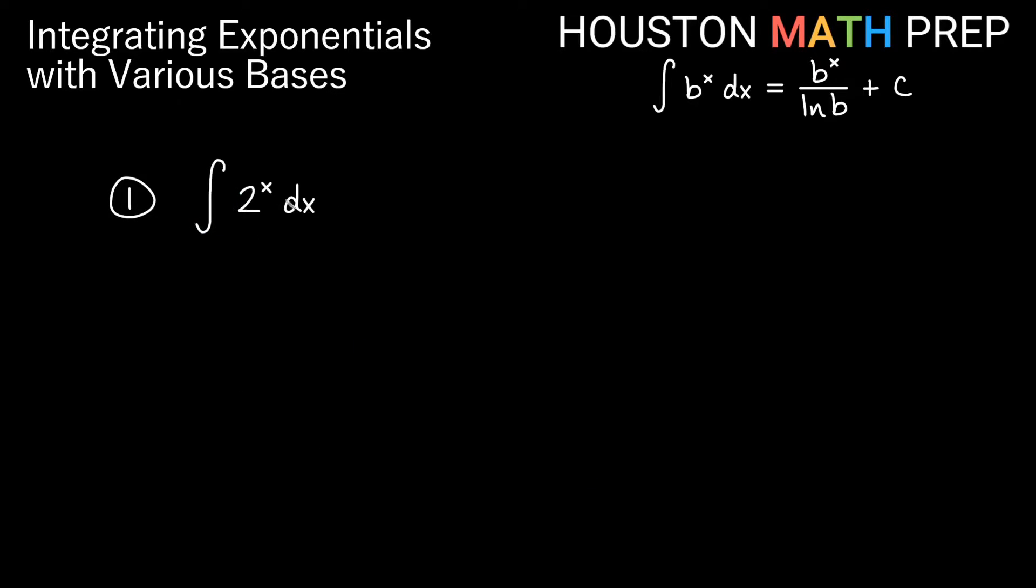Our first example here, we have the integral of 2 to the x dx. So our formula says we keep the 2 to the x, so we get 2 to the x itself divided by ln of the base, so that would be over ln of 2 plus our constant. And believe it or not, that's actually the entire process itself.